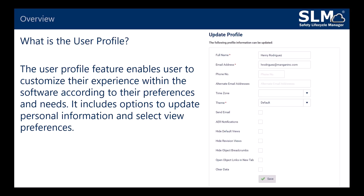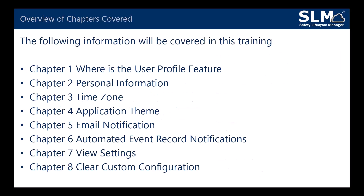Options include updating personal information and selecting view preferences. The following chapters will be covered in this training: Chapter 1 - where is the user profile feature; Chapter 2 - personal information; Chapter 3 - time zones; Chapter 4 - application themes; Chapter 5 - email notifications; Chapter 6 - automated event record notifications; Chapter 7 - view settings; and Chapter 8 - clear custom configuration.